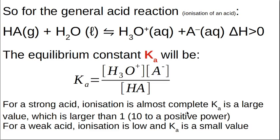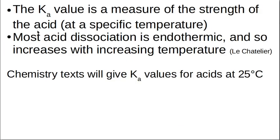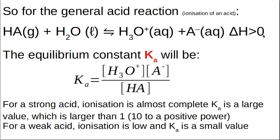For a strong acid like hydrochloric acid, the equilibrium lies far to the right — basically all you have left are protons and anions in solution. Dividing by a very small remaining reactant concentration gives a very large Ka. Strong acids that ionize completely have a Ka much greater than one, like 10² or 10⁶. For a weak acid, you don't get many protons, and the Ka value becomes very small.